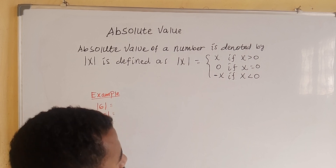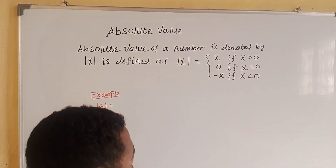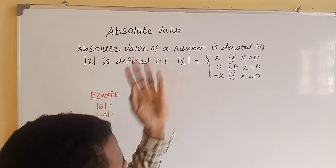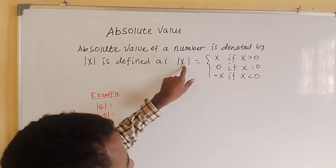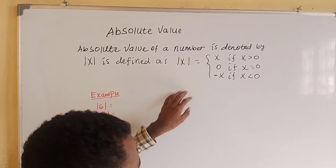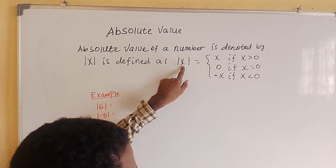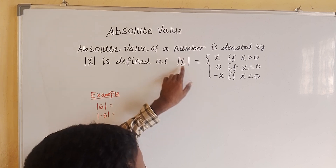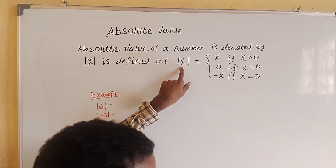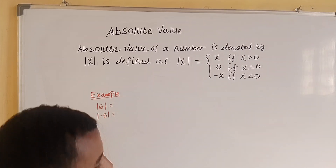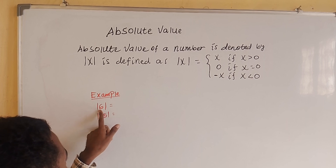Absolute value of x is x when x is positive. If x equals x, this is equal to x. If the absolute value of x is 0, x is equal to 0. If the absolute value of x is the negative of x, then negative of x equals 0. This is the absolute value of x.